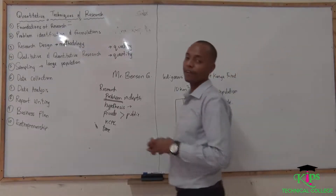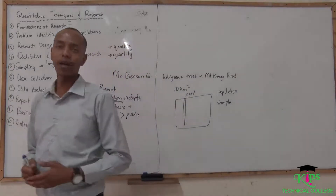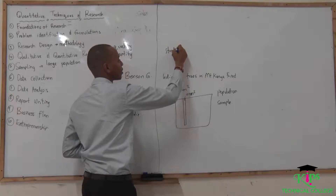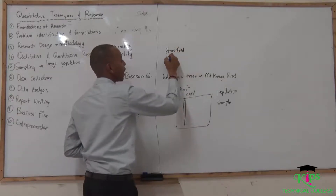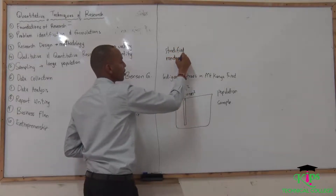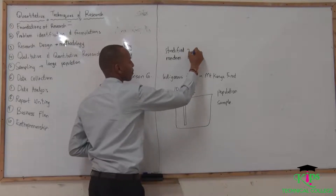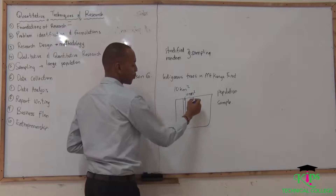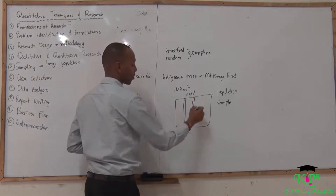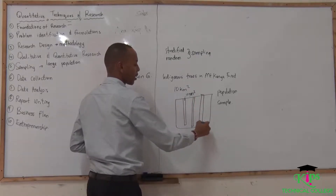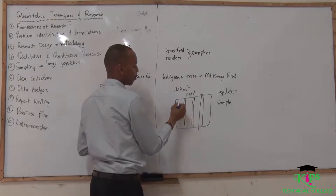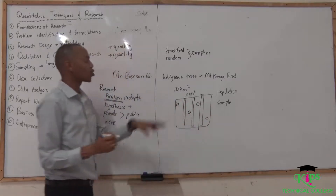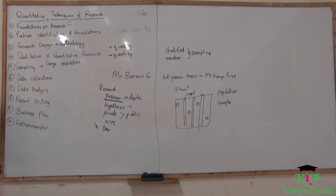We have different methods that are used in sampling. We usually have stratified sampling and random sampling — both are methods of sampling. Stratified sampling is when you pick actual defined structures. Random sampling is when you come and decide on this spot, this spot, and another spot — that's what we mean by random sampling.